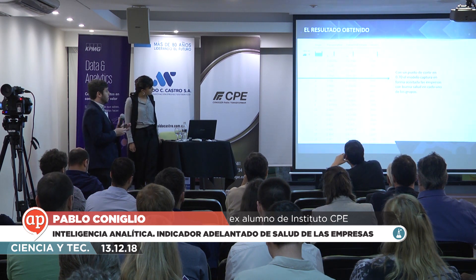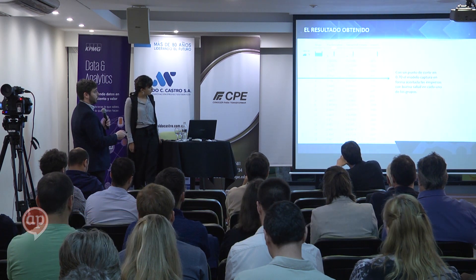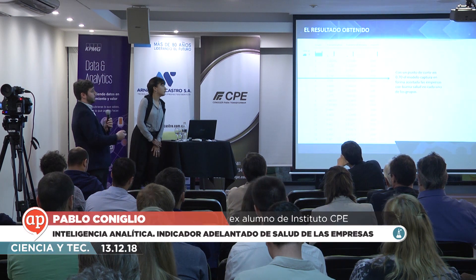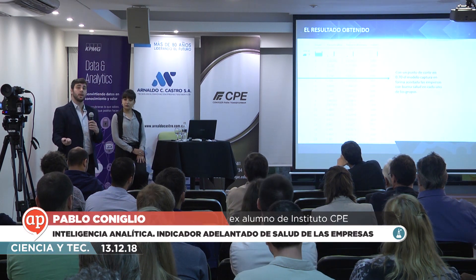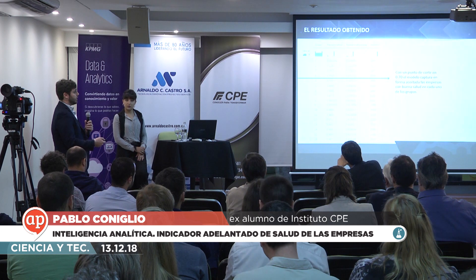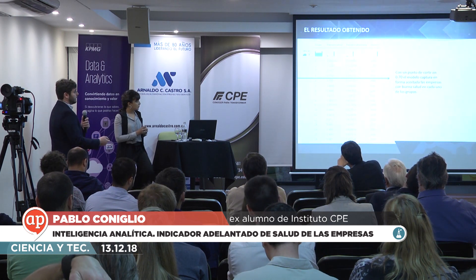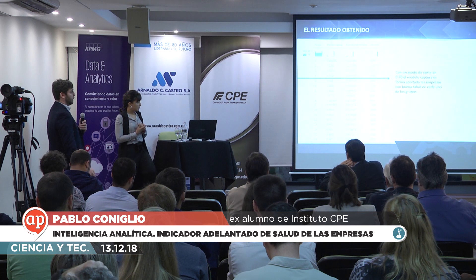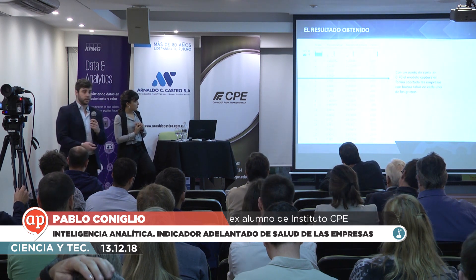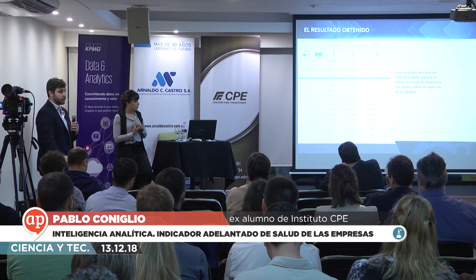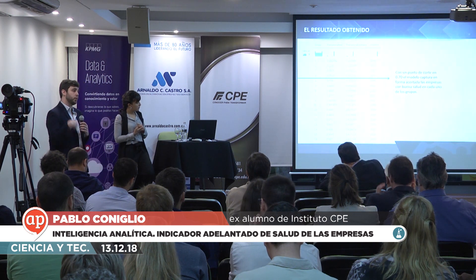Esta es la frecuencia real en estos registros. La base era, como les decía Lucía, 44.000 empresas. La idea era, una vez con los resultados del modelo, ver qué predecía el modelo y qué era lo que realmente pasaba en los distintos grupos de empresas. En este caso es bastante cercana la predicción y la realidad. Desde el punto de vista empírico pusimos un 0.70 como buena salud: con una probabilidad de un 70% de sobrevivir al año que viene, de que no quiebre.